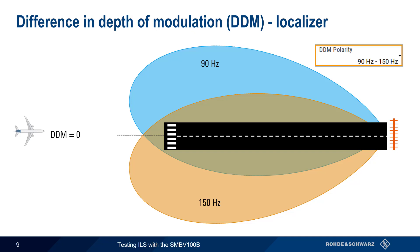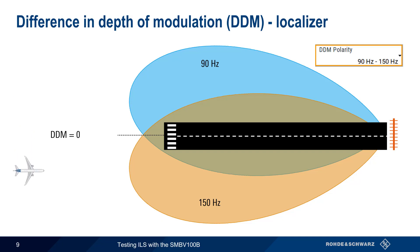Moving to the left of the centerline – that is, more into the 90 hertz lobe – causes DDM to increase or become more positive. Moving to the right of the centerline, or more into the 150 hertz lobe, causes DDM to decrease or become more negative. These changes in DDM are what cause the needle to move right and left on a localizer dial.